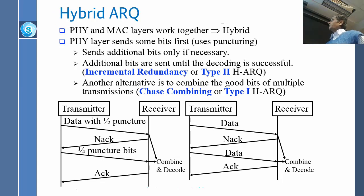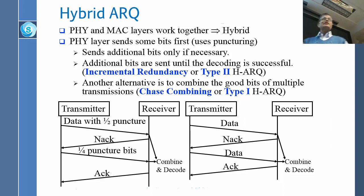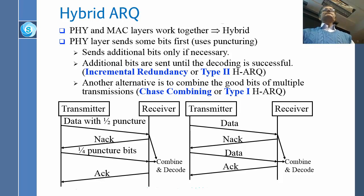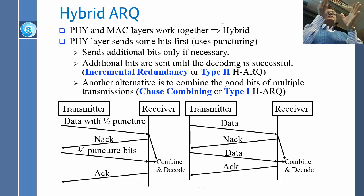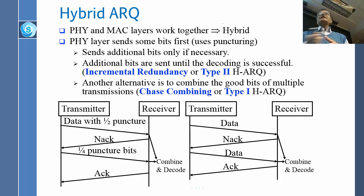We send the data with half puncture, and the receiver could not make anything good out of that. So it says it did not get it. Then the sender says, okay, here are half of the bits that I took out. Half puncture means I took out two bits, and now I am going to send you one of those two bits. You are not sending the whole data — just some part of what had been kept. Now you might be able to combine and decode.